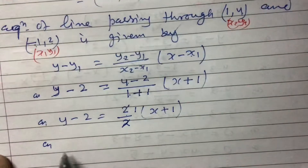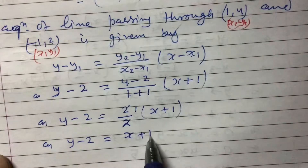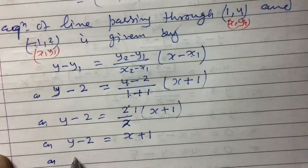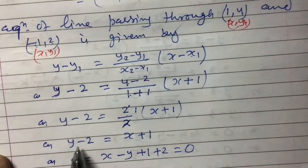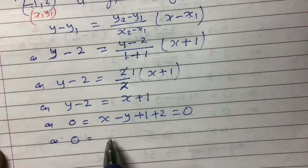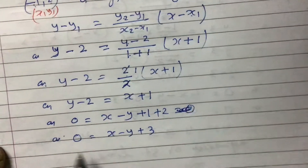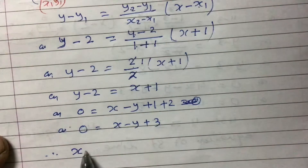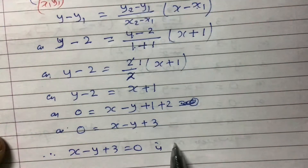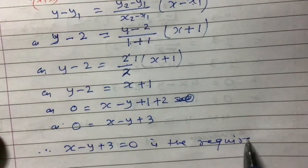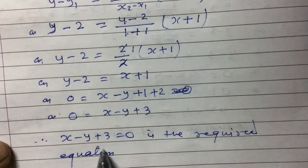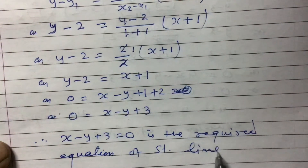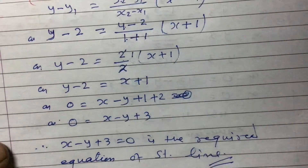Rearranging: y minus 2 equals x plus 1. Transferring all terms to one side: 0 equals x minus y plus 1 plus 2, which gives x minus y plus 3 equals 0. So x minus y plus 3 equals 0 is the required equation of the straight line. Thank you for watching this video.